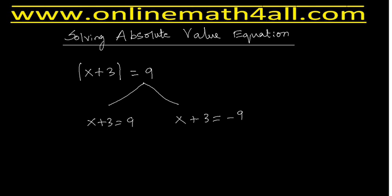The first step is to remove the absolute value, and we take the expression inside the absolute value and set it equal to the number on the right side with the same sign. If it is positive, we keep the positive sign. If it is negative, we keep the negative sign. In the second branch, we take the same expression, but on the right side we take the number with the opposite sign.